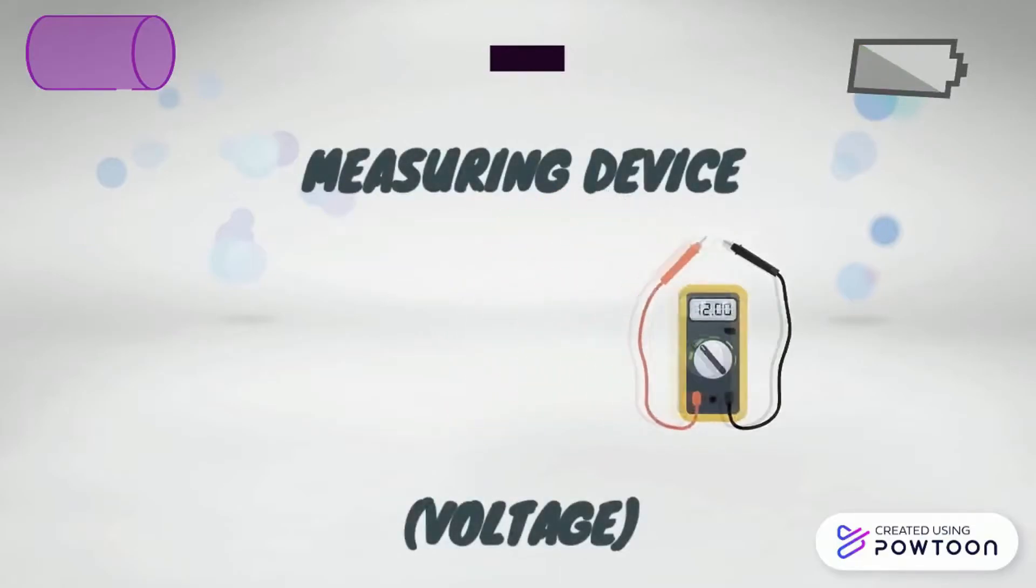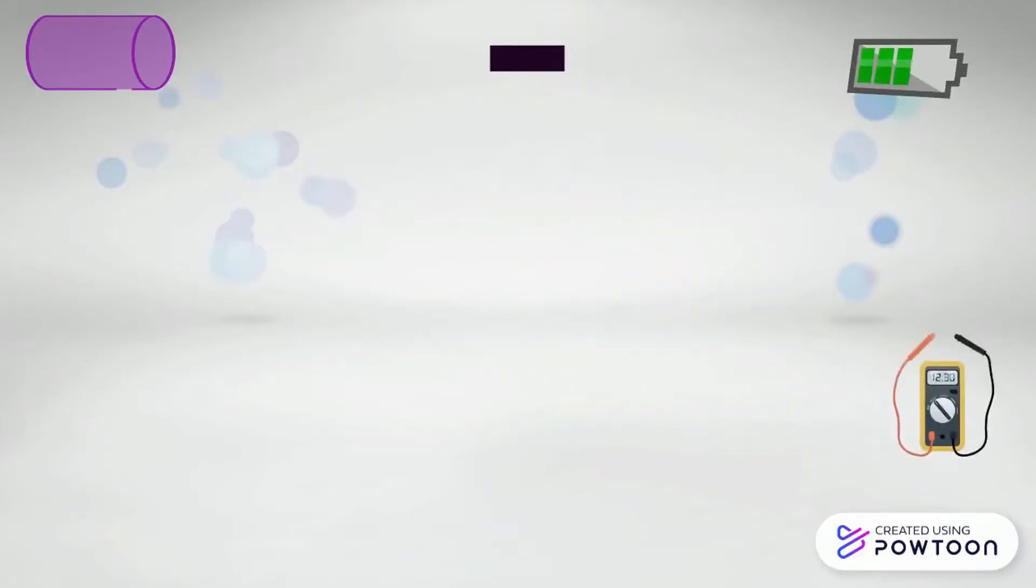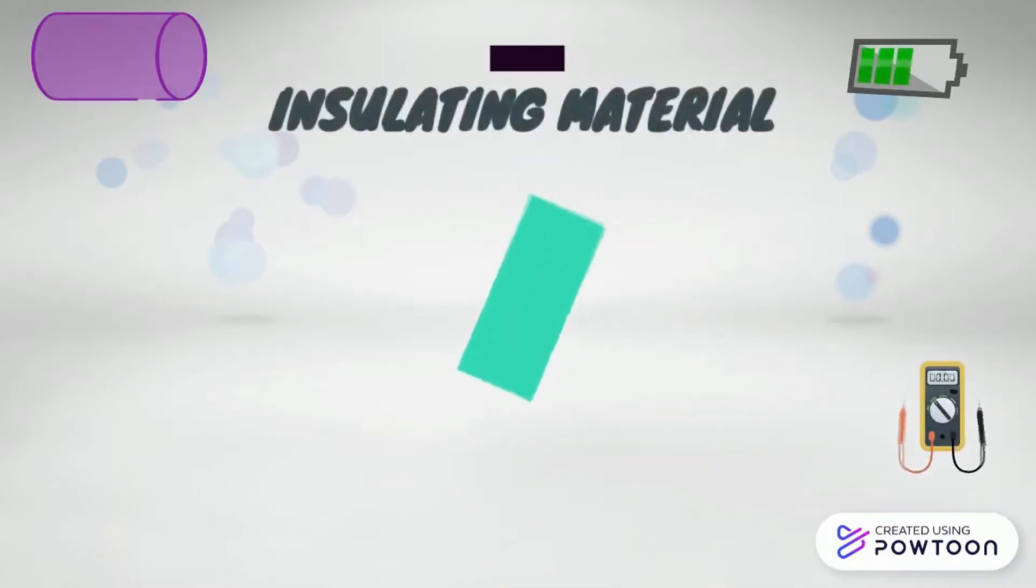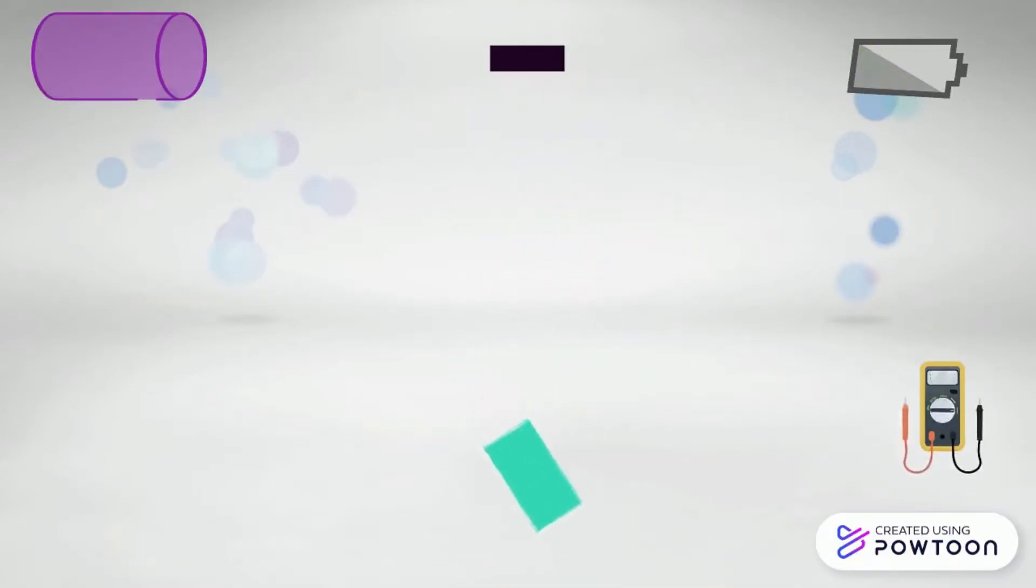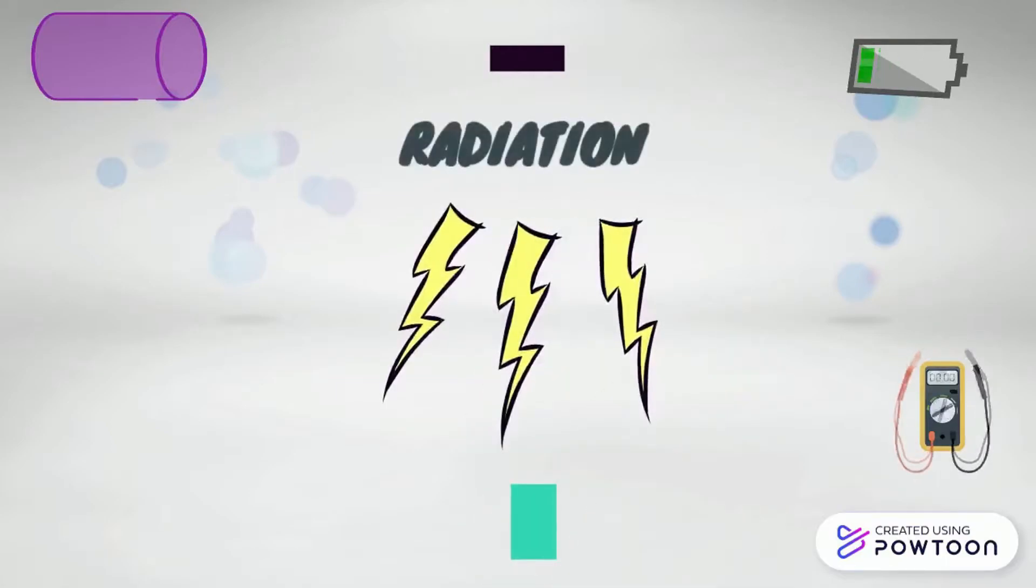Number four, measuring device to measure the voltage. Number five, insulating material. And the last, number six, radiation.